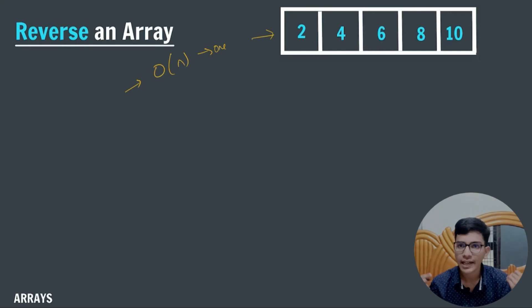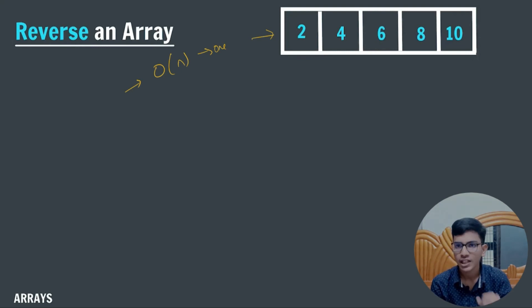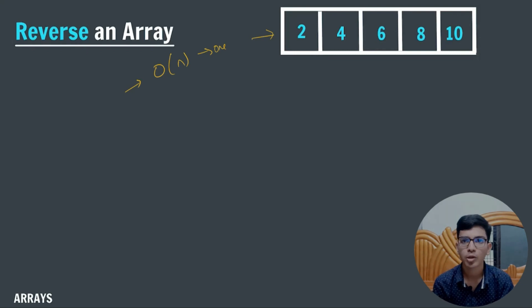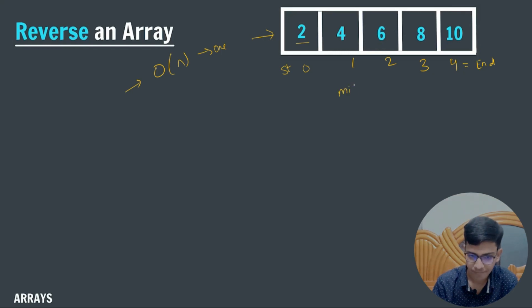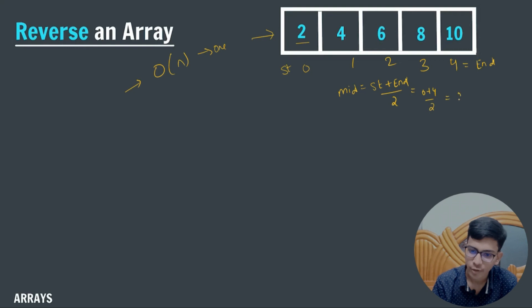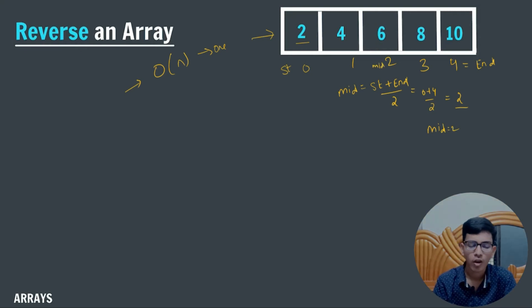Using the array itself, we have to swap or change the elements in order to reverse the array. The logic is: first, this is my first element at index zero, and this is my starting index, and this is my ending index. Let me calculate mid here: mid = (start + end) / 2 = (0 + 4) / 2 = 2. So my value of mid is 2.